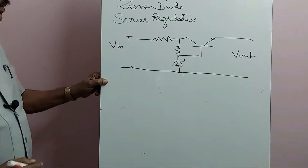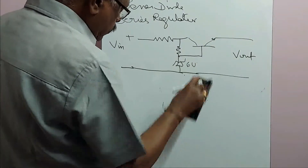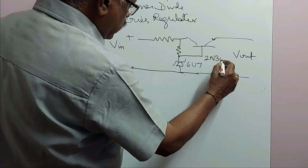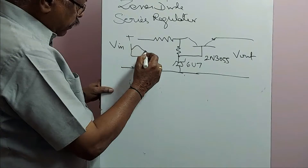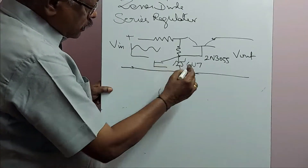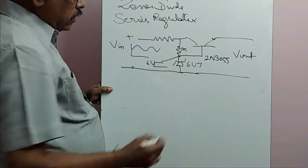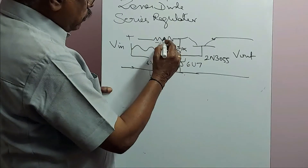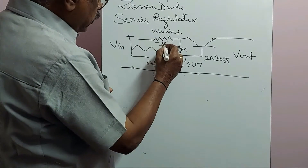The output voltage V out, let it be 6.3 volts — a 6.3 volt or 6.7 volt zener. The transistor used here is the 2N3055, which is an NPN high power transistor. The input voltage is going to be fluctuating, while the zener maintains a constant voltage of 6.7 volts. There is a 1K resistor which drops the voltage to 6.7 volts, and a higher ohm resistor on the input side.